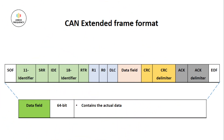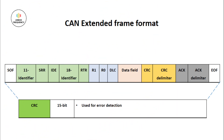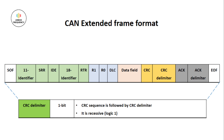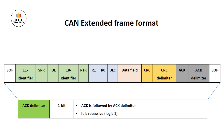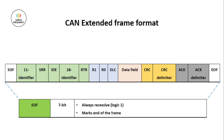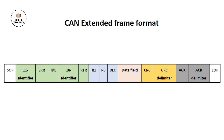The Data field is 64 bits and contains the actual data to be transmitted. It is followed immediately by CRC — a 15-bit value used for error detection. Immediately after CRC is the CRC Delimiter, which is 1 bit, giving time for CRC calculation. ACK is 1 bit; the transmitting node sends a recessive bit, and after successful reception the receiver sends a dominant bit. The ACK Delimiter is 1 bit recessive, allowing time to send acknowledgement. EOF marks the end of frame and is a 7-bit recessive value.